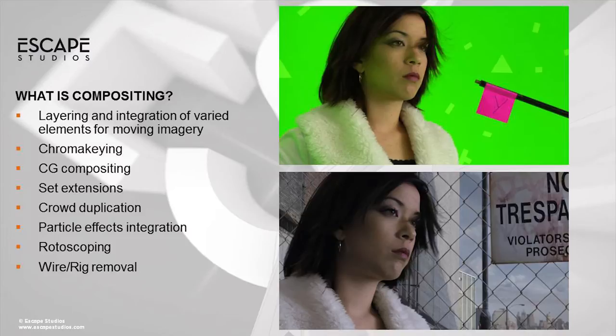Let's talk about what compositing is. There are a variety of different types of compositing, but the basic starting point is that it's layering — layering and then integrating those varied elements into a moving image. Your camera may be a lock-off, but it's still about creating a non-still image — it's about hair moving even if the camera isn't, or about the camera moving and getting new elements to track in.